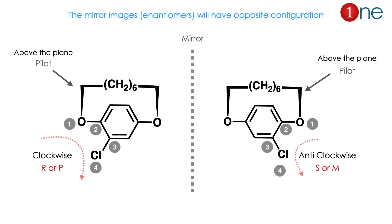Like any other chirality, the mirror image of an ansa compound will have the opposite configuration. The first compound with chlorine is the mirror image of the other — if you assign priorities with oxygen as 1, you find the first is R and the second is S, or in the new nomenclature, P and M respectively. Mirror images always have opposite configurations.